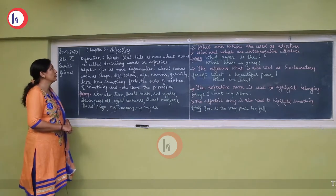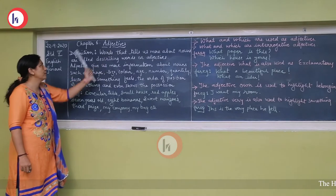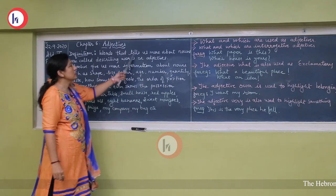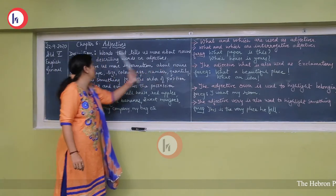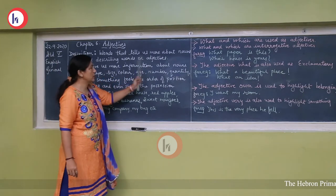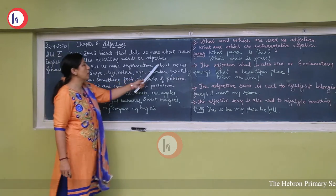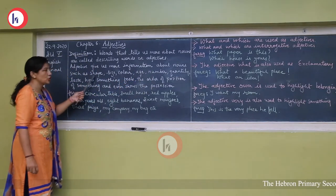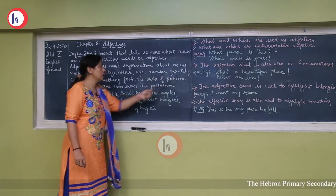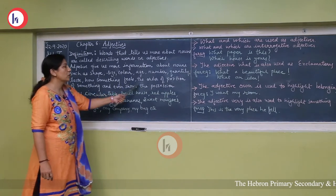Hello everyone, today we will start with our next chapter, chapter number 6, Adjective. We'll see the definition first. Words that tell us more about a noun are called describing words or adjectives. Adjectives give us more information about nouns such as shape, size, color, age, number, quantity, taste, how something feels, and the order of position.